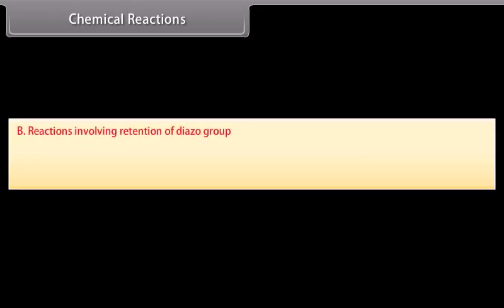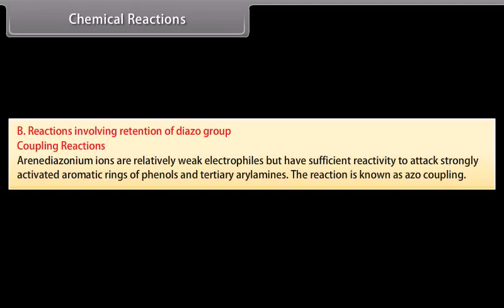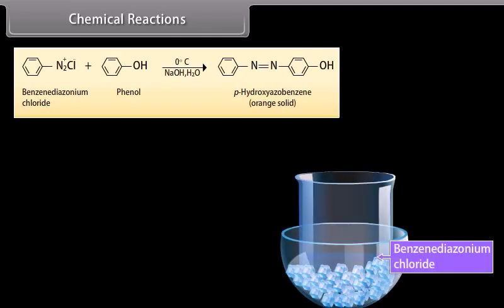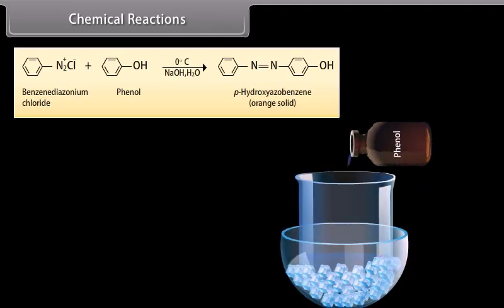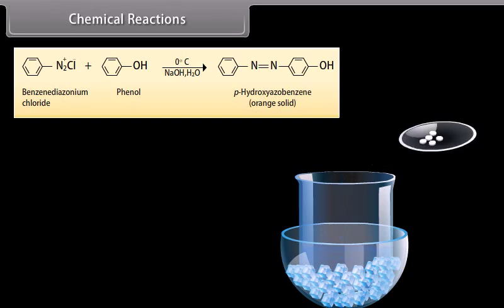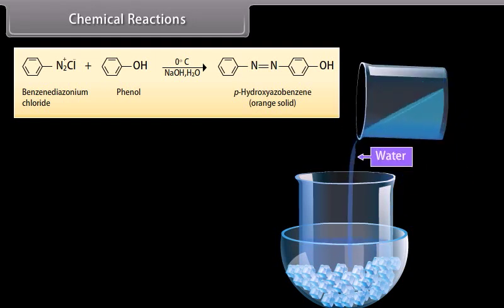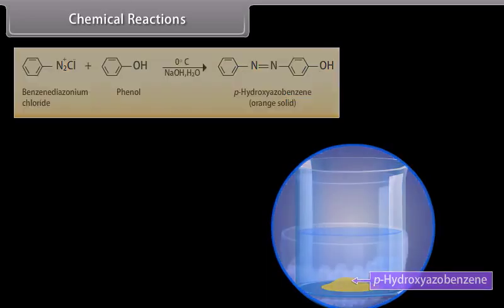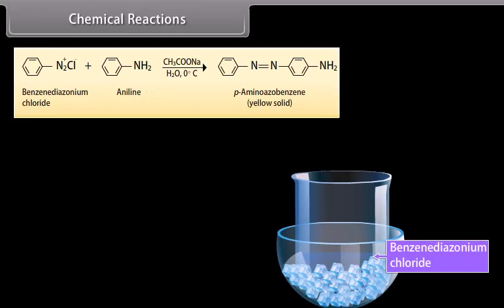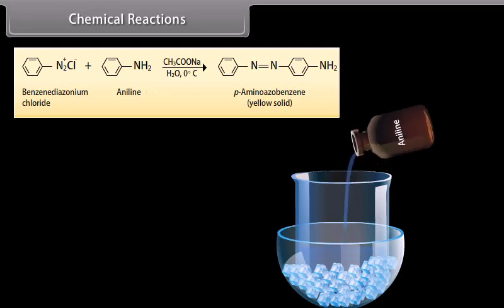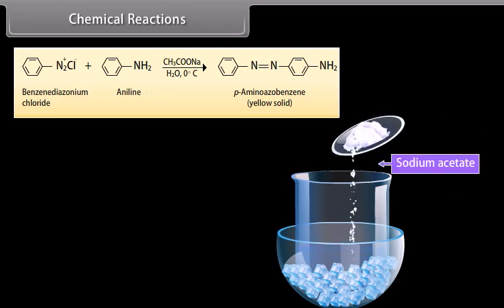Reactions involving retention of the diazo group — Coupling reactions: Arene diazonium ions are relatively weak electrophiles but react with strongly activated aromatic rings of phenols and tertiary arylamines. This is known as azo coupling. Benzene diazonium chloride reacts with phenol in the presence of NaOH at 0°C to produce p-hydroxyazobenzene. Benzene diazonium chloride reacts with aniline in the presence of sodium acetate at 0°C to produce p-aminoazobenzene.